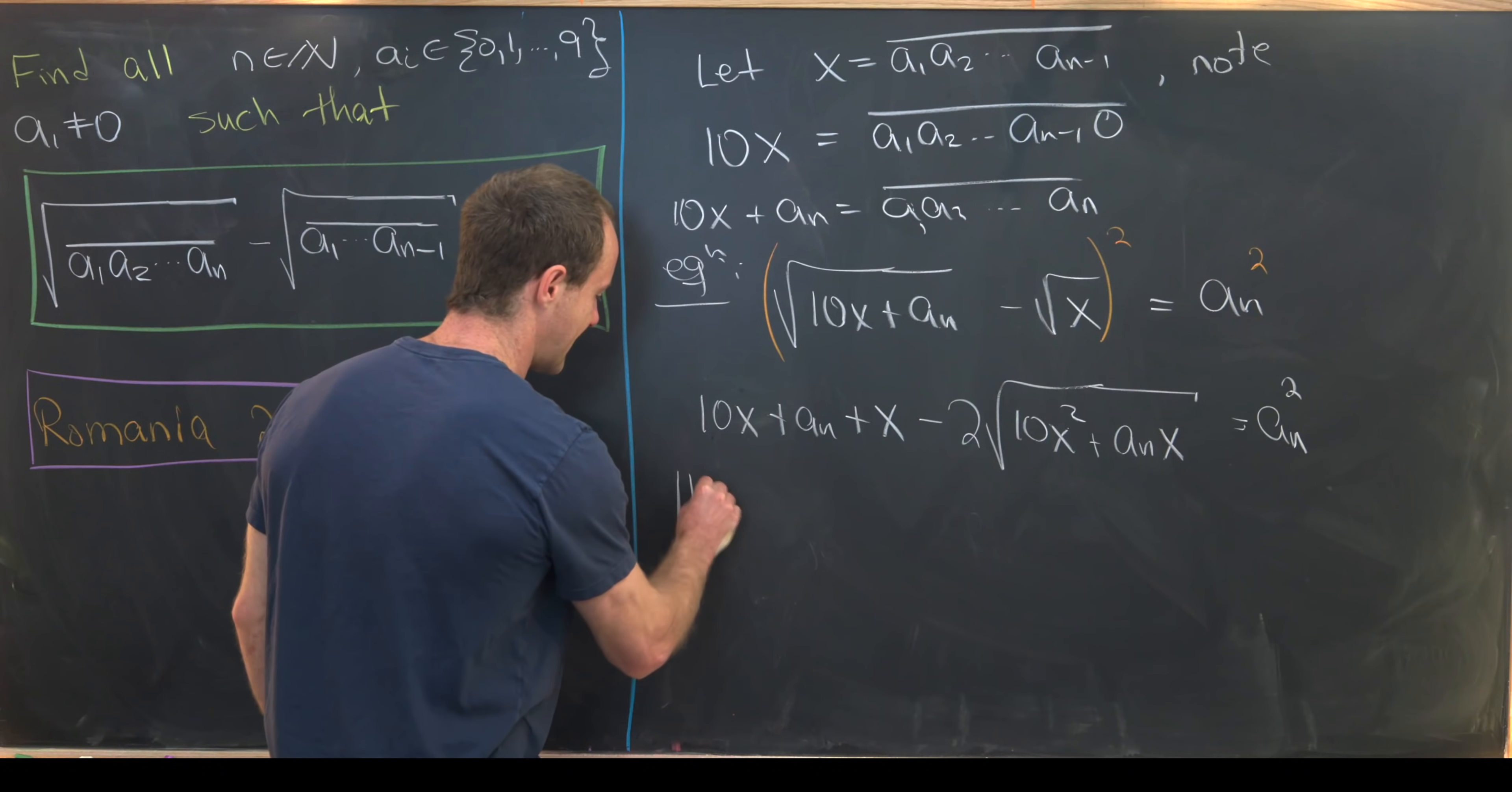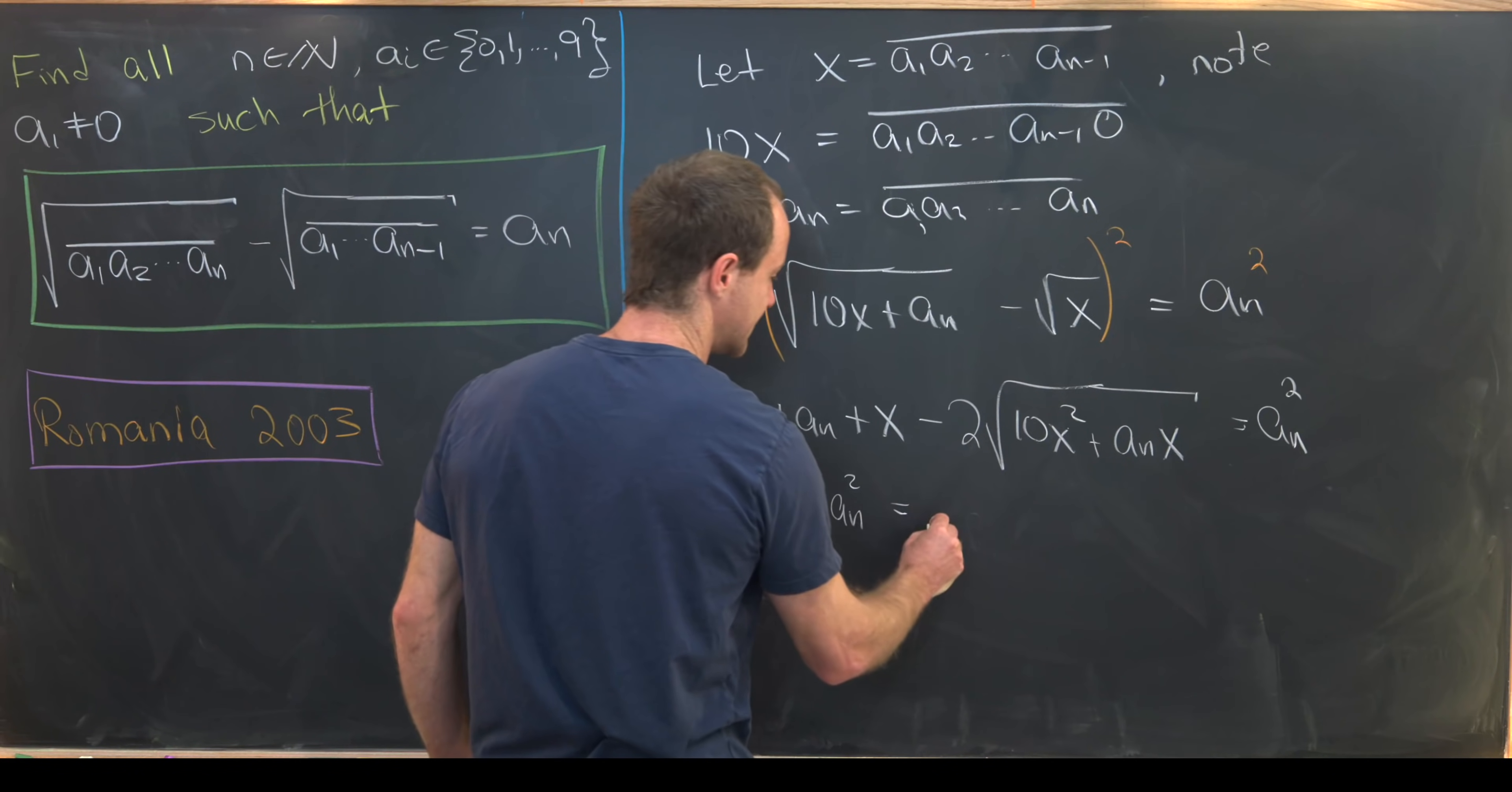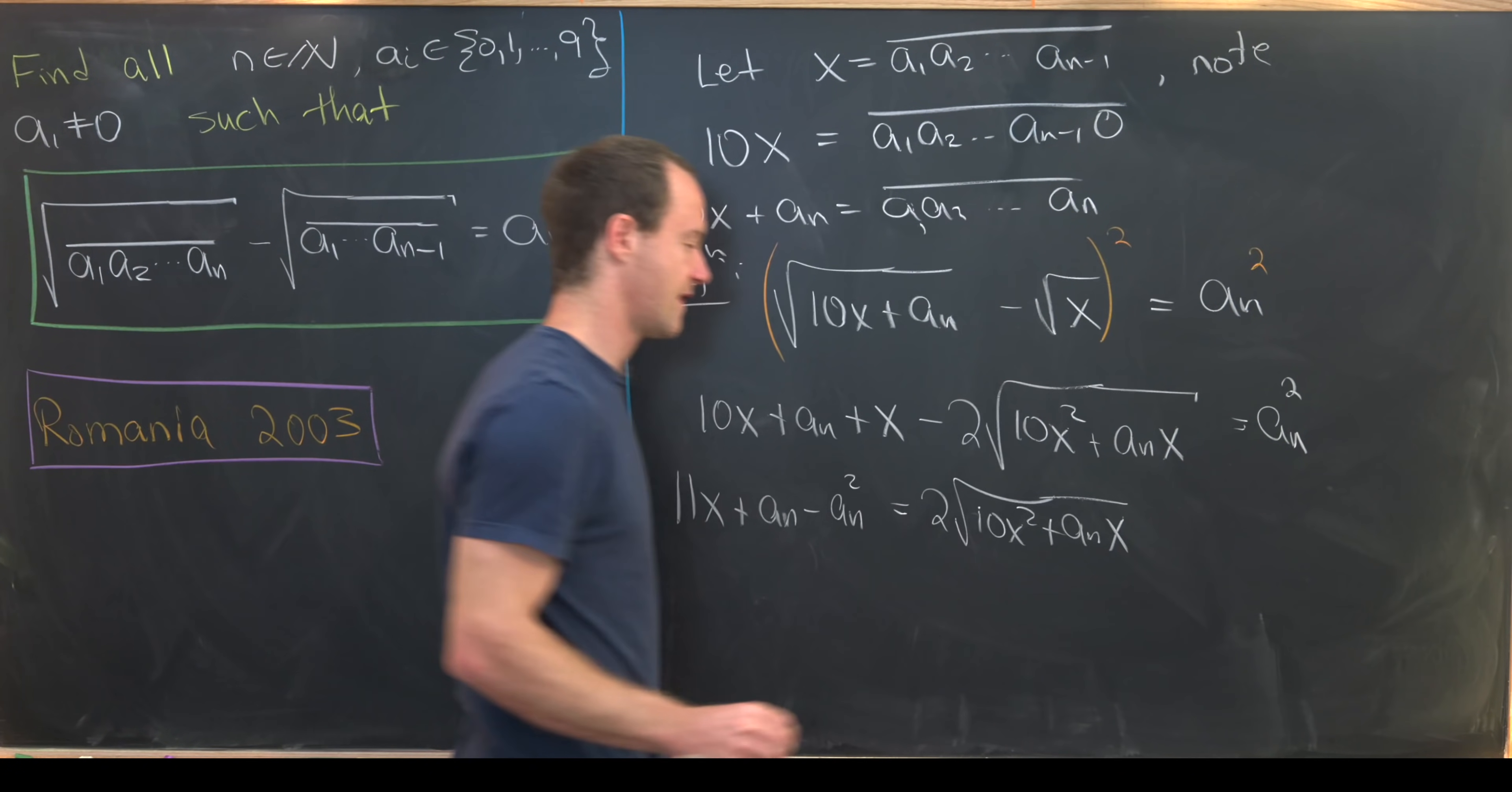So let's see, we'll have 11x plus an minus an squared from moving this over is equal to 2 times the square root of 10x squared plus an x. Okay, good.